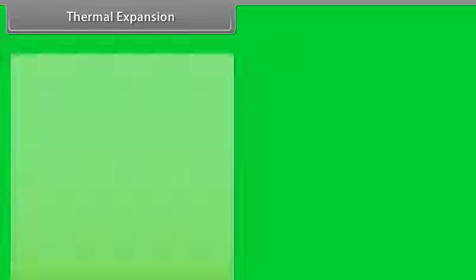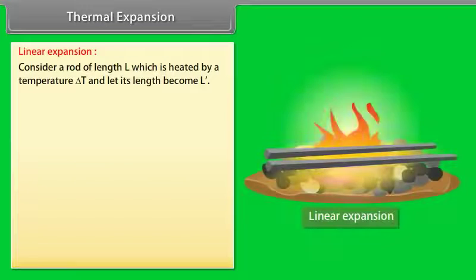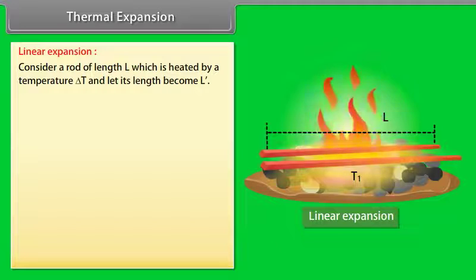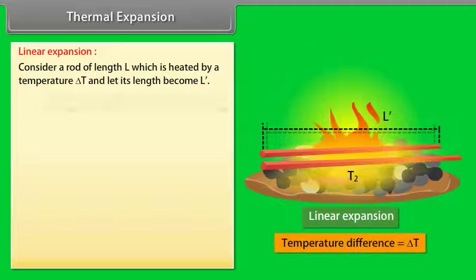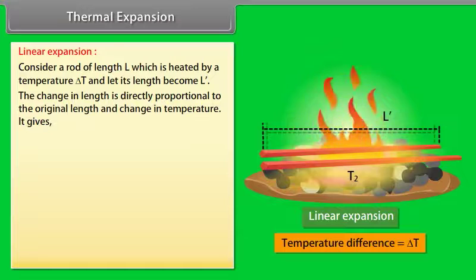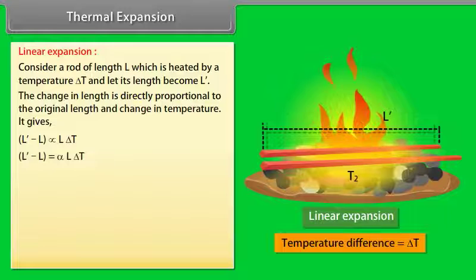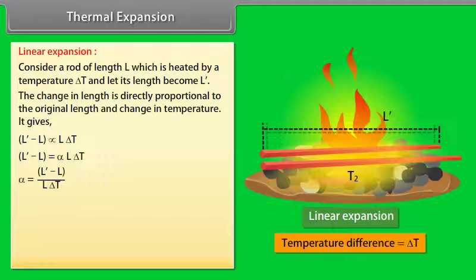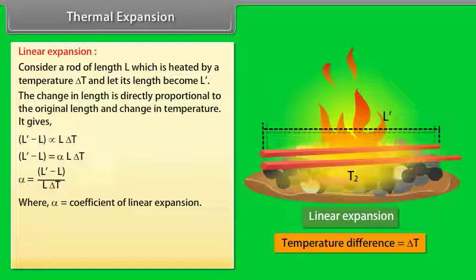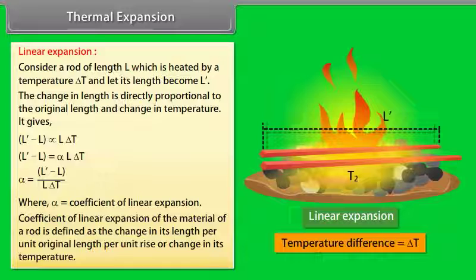Linear expansion: Consider a rod of length L heated by a temperature ΔT, with new length L'. The change in length is directly proportional to the original length and change in temperature: L' − L = αLΔT. The coefficient of linear expansion α = (L' − L)/(LΔT), and is defined as the change in length per unit original length per unit rise in temperature.